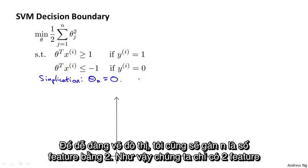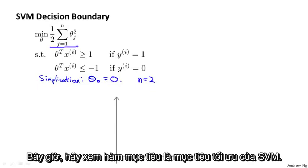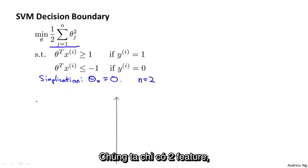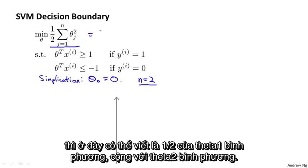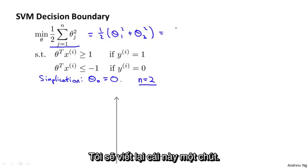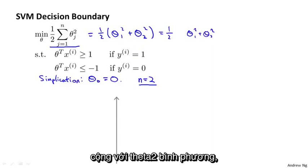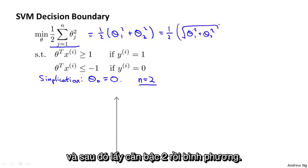To make things easy to plot, I'm also going to set n, the number of features, equal to two — so we have only two features x1 and x2. Now let's look at the optimization objective of the SVM. With only two features, this can be written as one half of theta1 squared plus theta2 squared. I'm going to rewrite this as one half of the square root of theta1 squared plus theta2 squared, all squared.